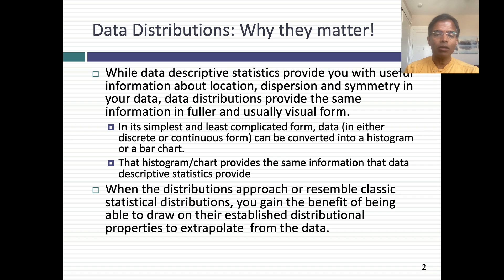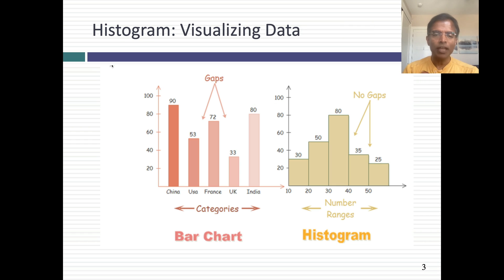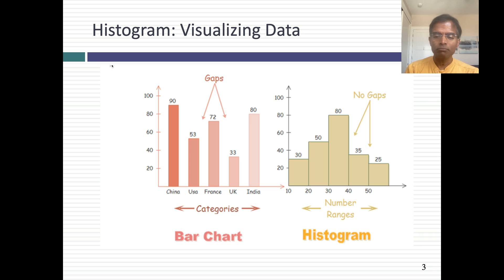So let's start with how you decide what distribution fits your data. If you take your sample observations and compute your data descriptives, you basically classify them and put them into a chart. You can present your data in one of two ways: if your data is discrete, you can present it as a bar chart; if your data is continuous, you can present it as a histogram.